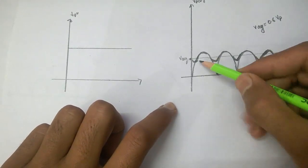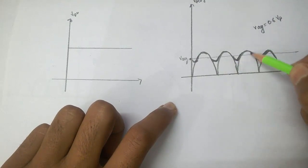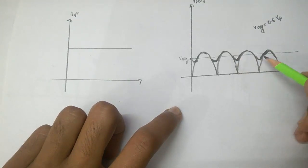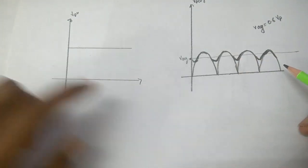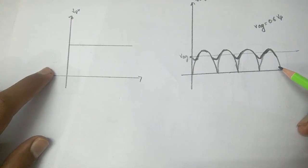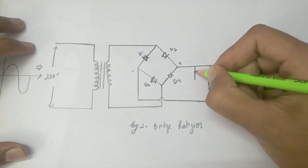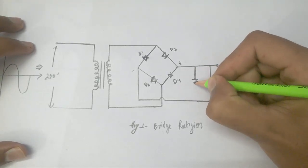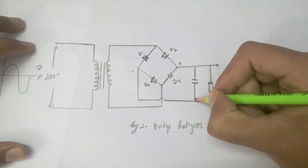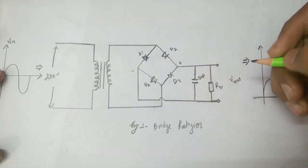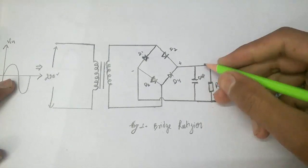Plus this AC component — so if you want a pure DC value, we somehow need to eliminate the ripple. That's why we use a capacitor as a filter to remove the AC components. You also know the basic behavior of capacitors: they block DC components. So here we use a capacitor as a filter and we get a pure DC voltage across the load after passing through this filter.